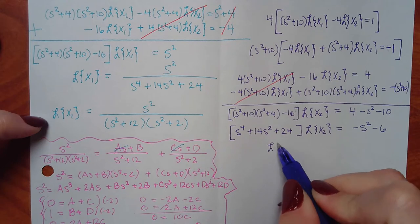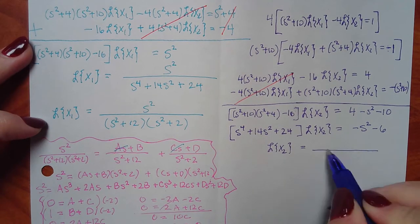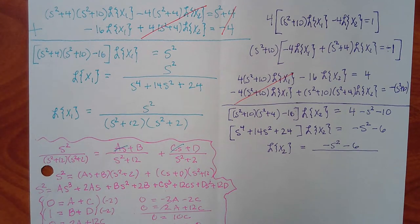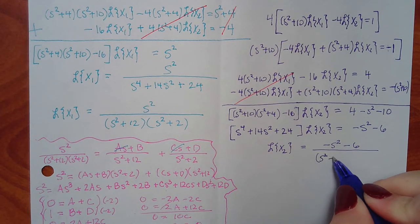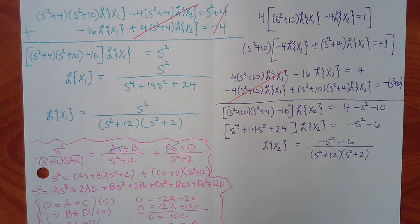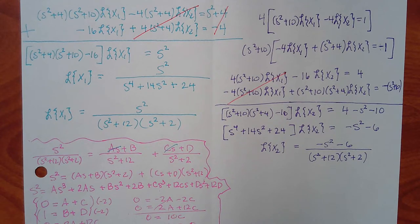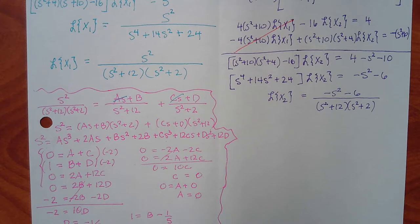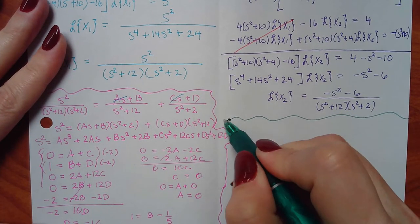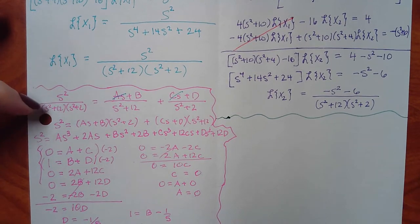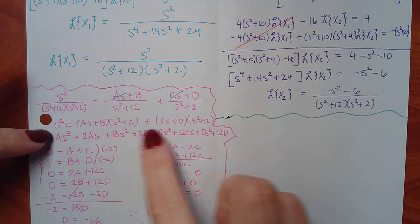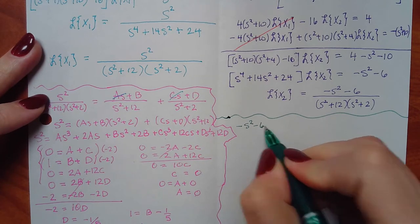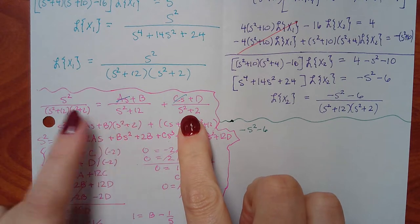Now solving for L{X2}: dividing both sides by the bracket, and factoring the denominator as we already did, I get L{X2} equals (negative S squared minus 6) over (S squared plus 12)(S squared plus 2). The numerator is different from before, so I have to do a whole other partial fraction decomposition. Unfortunately the numerator is not the same as before, so it's a new partial fractions problem.